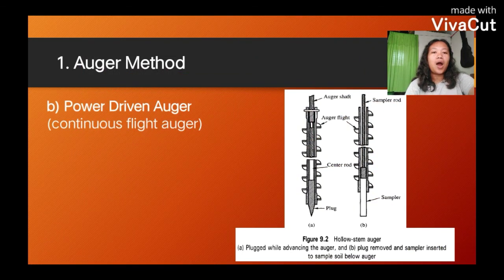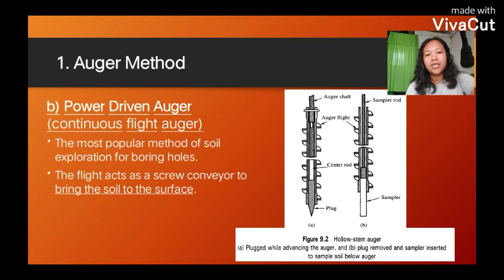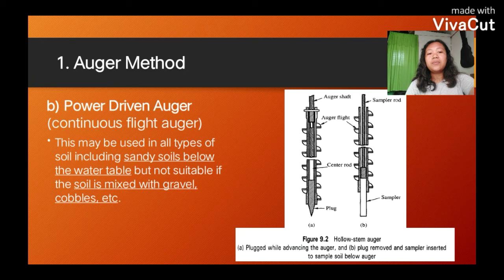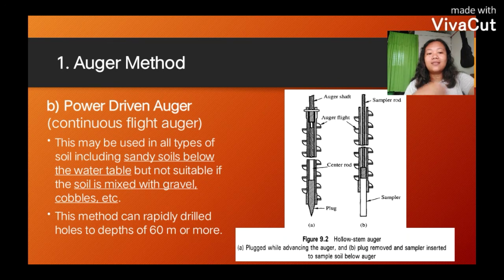Now let's move on to power-driven auger, or the continuous flight auger. It's the most popular method of soil exploration for boring holes. The flight acts as a screw conveyor to bring the soil to the surface. This may be used in all types of soil including sandy soils below the water table, but not suitable if the soil is mixed with gravel, cobbles, etc. This method can rapidly drill holes to depths of 60 meters or more.